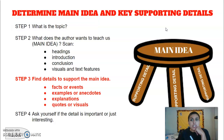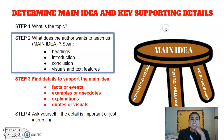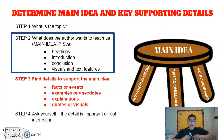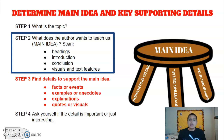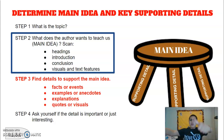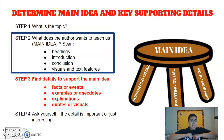After we find the topic, which is usually one word, we ask ourselves: what does the author want to teach us? What does he want to teach me about the text? We can look at the headings, the introductions, the conclusions, and even the pictures to help us. Remember, step one: what is the topic? Step two: what does the author want to teach me or us? That's the main idea.